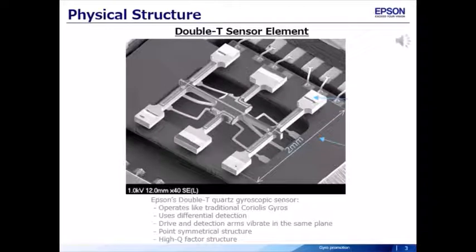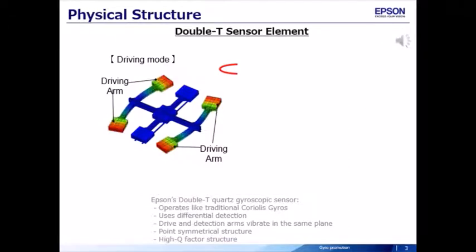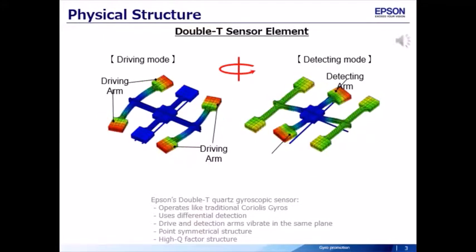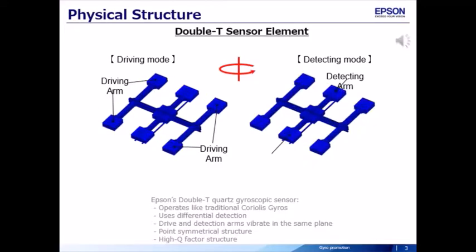Epson's Gyro Sensors use the quartz crystal, double T-shape sensor element. It operates like the traditional Coriolis Gyros. Epson's Gyro offers superior performance by using differential detection, symmetrical structure where drive and detection arms vibrate in the same plane, and high Q-factor offered by the quartz crystal sensing element.